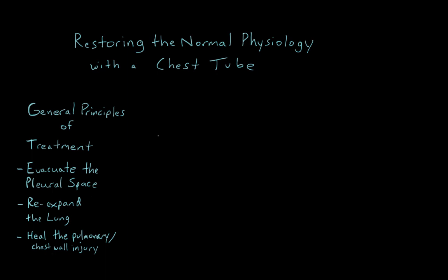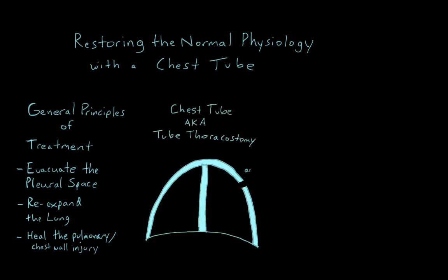Before we tackle how a chest tube works, let's define what a chest tube is. The doctor word for chest tube is tube thoracostomy, but chest tube is the term you'll be using on the wards, so we'll use that term. Simply stated, a chest tube is a tube that is inserted from the outside environment through the chest wall and into the pleural space, allowing air, blood, or fluid to be drained out of the pleural space. In this video, we will not discuss how to place a chest tube.